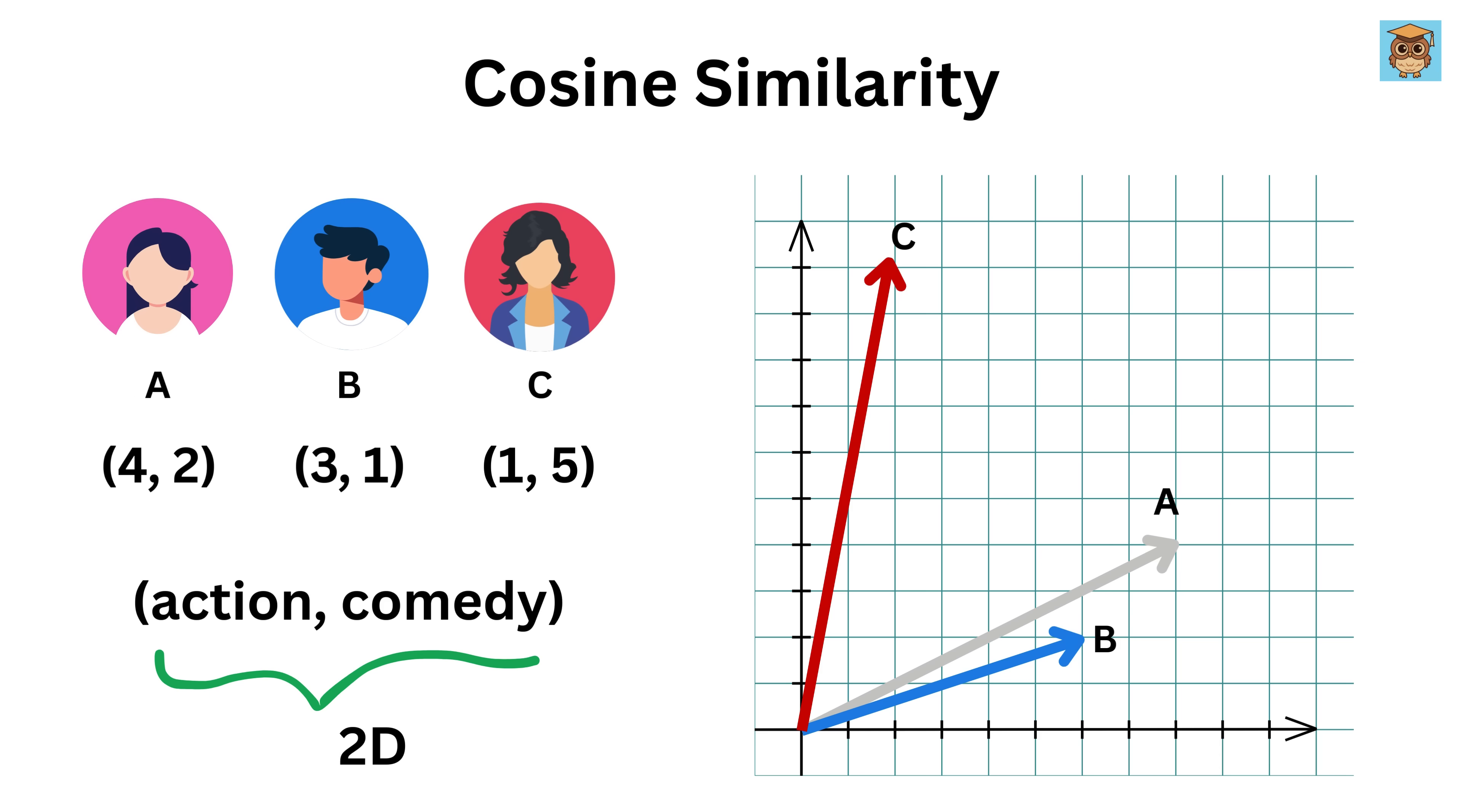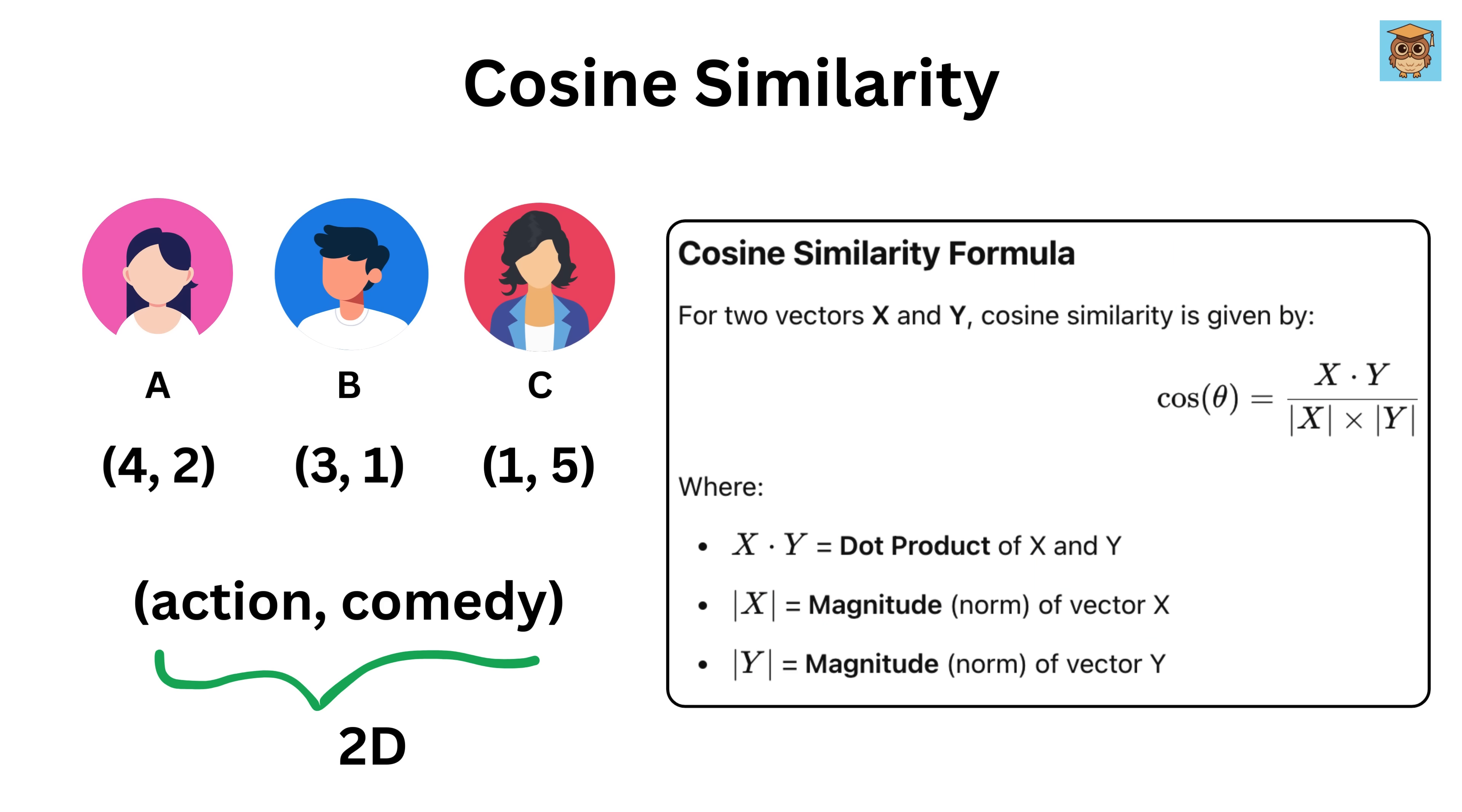So cosine similarity doesn't care about how long the arrows are, it only cares about the angle between them. Smaller the angle, higher the similarity. Mathematically, we compute it like this: cosine similarity of any two vectors x and y equals dot product of x and y divided by magnitude of x times magnitude of y.